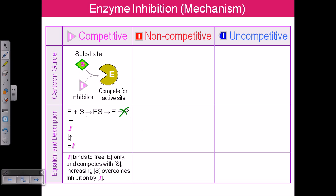The general note here: the inhibitor binds to free enzyme only and competes with the substrate. Increasing substrate concentration overcomes the inhibition by this kind of inhibitor.